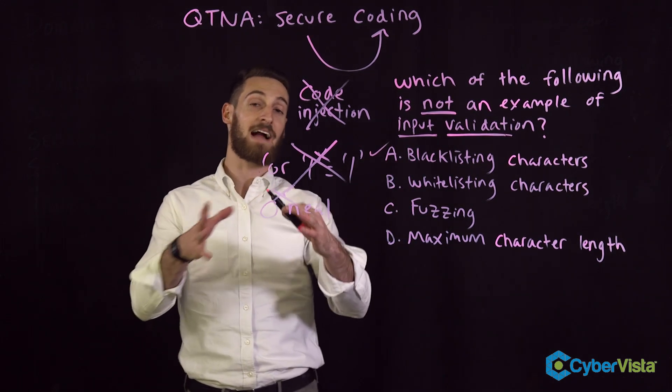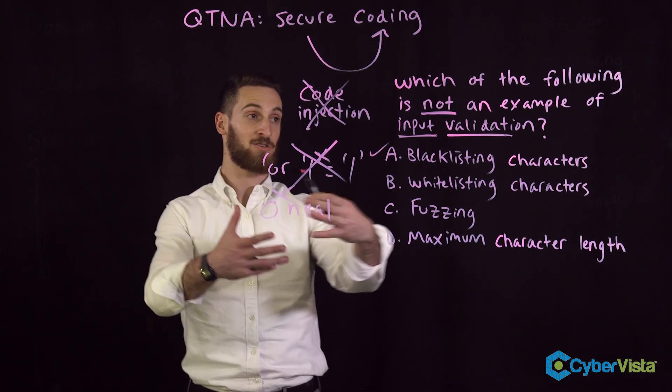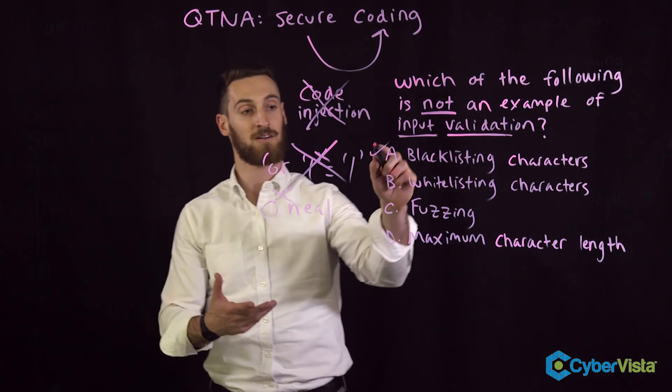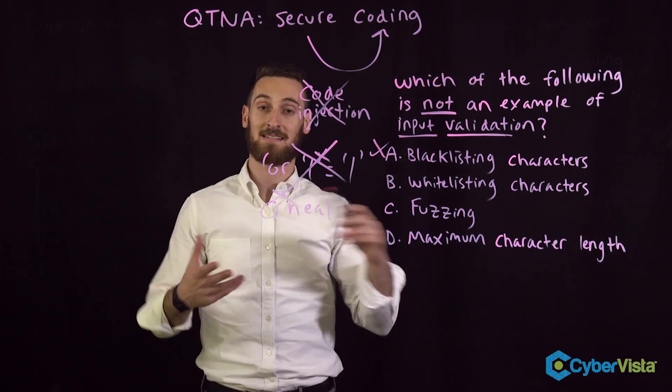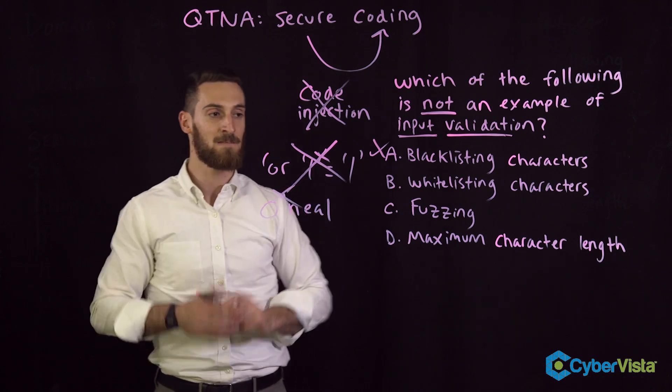What you want to do is if it's the right example of input validation, put a little X next to it, then keep going. The one with the check mark that is not, that's the right answer.